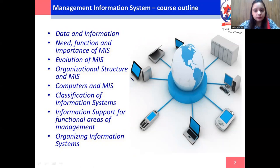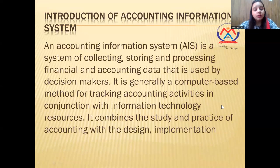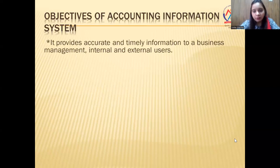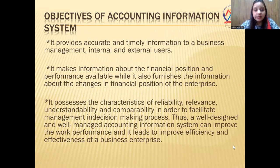What is the use of the information system in accounting? Accounting information system, or AIS, is a system of collecting, storing, and processing financial and accounting data that is used by decision makers. It is generally a computerized-based method for tracking accounting activities in conjunction with information technology resources. It combines the study and practice of accounting with the design and implementation. The objectives of AIS are: it provides accurate and timely information to business management — internal or external users. It makes information about the financial position and performance available. It possesses the characteristics of reliability, relevance, understandability, and comparability to facilitate management in the decision-making process.